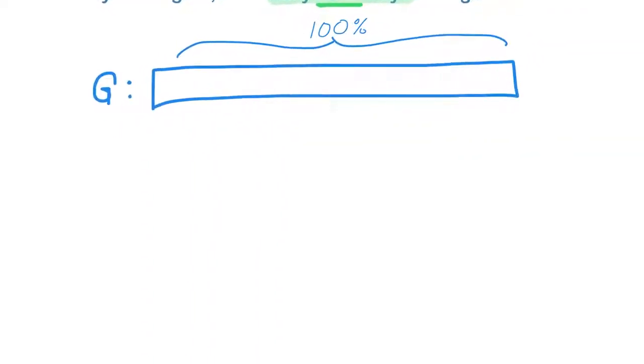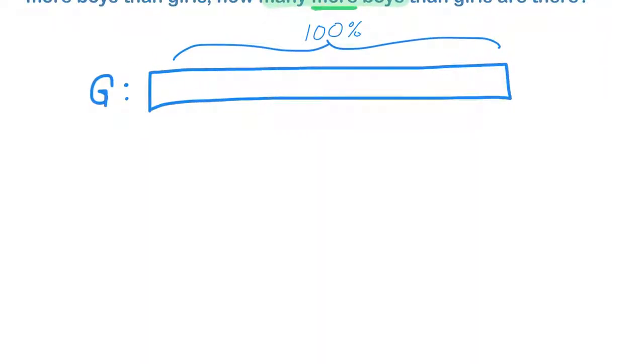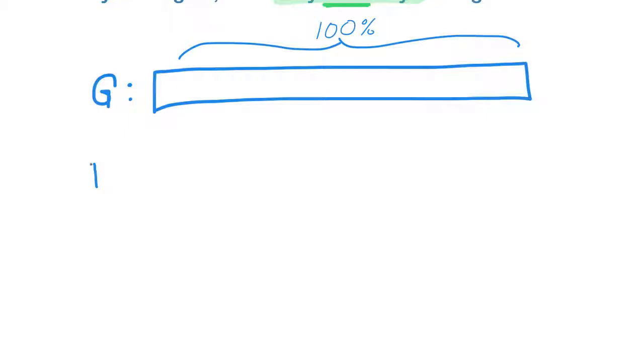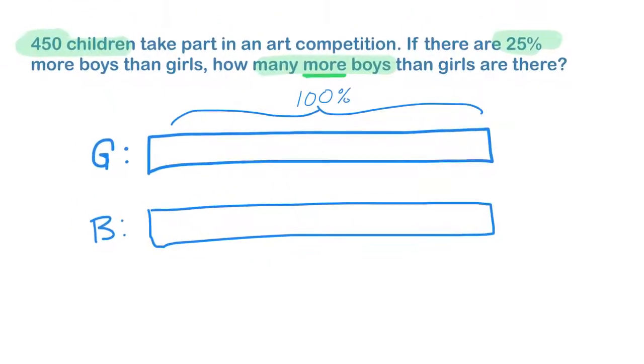I know that there are as many boys as girls. So I can go ahead and draw a bar the same size because there are at least as many boys as girls. As it happens, there are 25% more. So I'm not done with that bar yet. I'm going to extend it. So 25%, what does that look like in my bar?